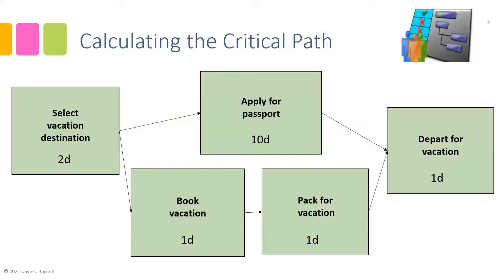This information is also contained in the appendix of the textbook. We can see five activities with dependencies between them and durations estimated for each one. We're going to do first what's called a forward pass, starting with the first activity or activities that will start — those are the ones without dependencies. In this case, 'Select Vacation Destination' has no predecessors, so it is the initial activity.